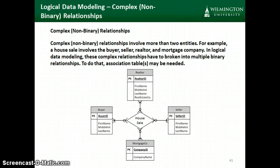We might have a relationship that has multiple entities involved. For instance, if you're buying or selling a house, there's typically a buyer, a seller, a realtor, and a mortgage company involved. Within Visio, there's no way that we can represent these four-way types of relationships. And if we have a relationship that is more than two entities, what we're going to have to do is break that relationship apart so that we're looking at two entities at a time.